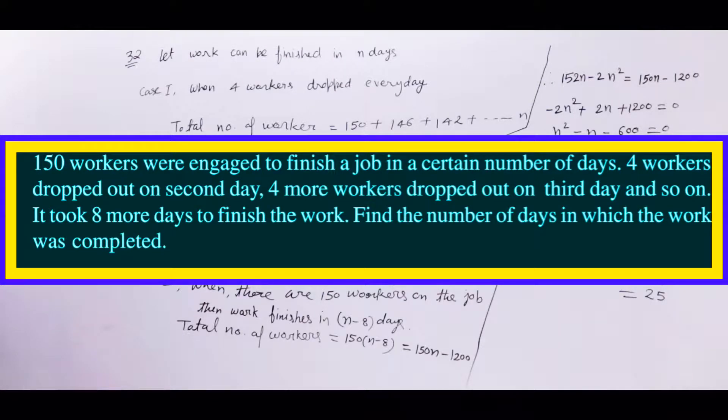150 workers were engaged to finish a job in a certain number of days. 4 workers dropped out on second day, 4 more workers dropped out on third day and so on. It took 8 more days to finish the work. Find number of days in which work was completed.